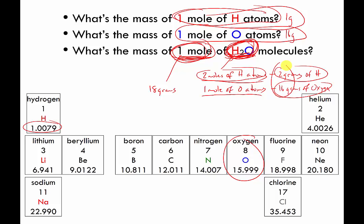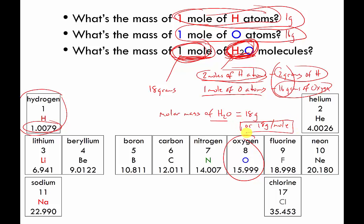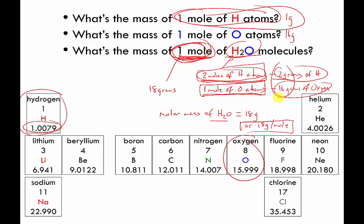So one mole of water weighs 18 grams because we add up the weights of all the pieces. What we just did was figure out the molar mass of something more complicated than a simple atom — we figured out the molar mass of a molecule, in this case water. The molar mass of water is 18 grams, or 18 grams per mole. One mole of water has two moles of hydrogen in it, weighing two grams, and one mole of oxygen, weighing 16 grams. Altogether, all of the pieces weigh 18 grams.